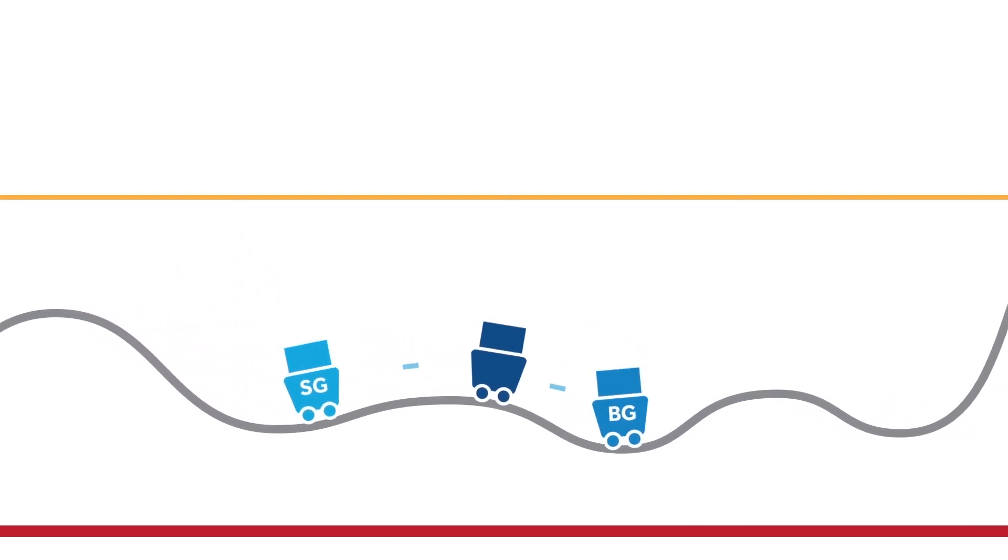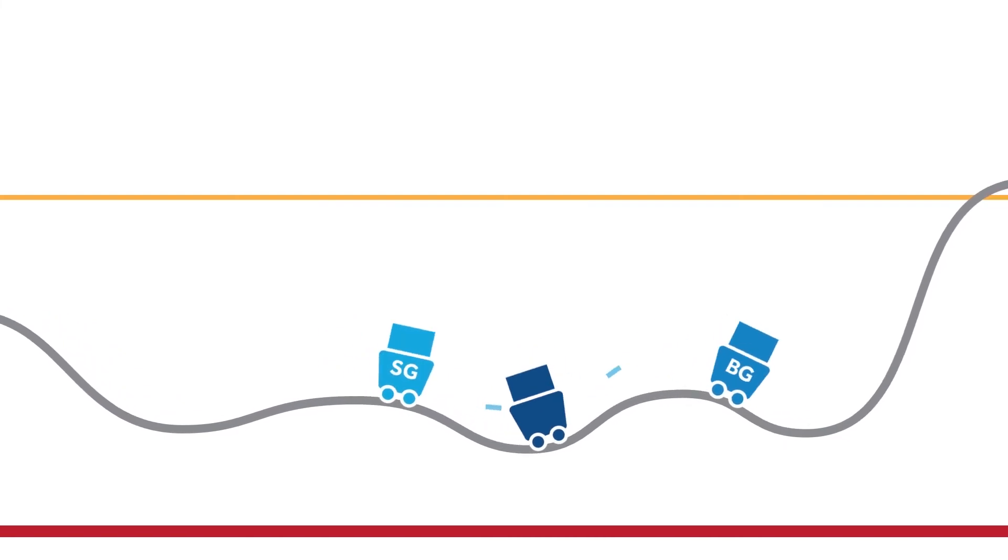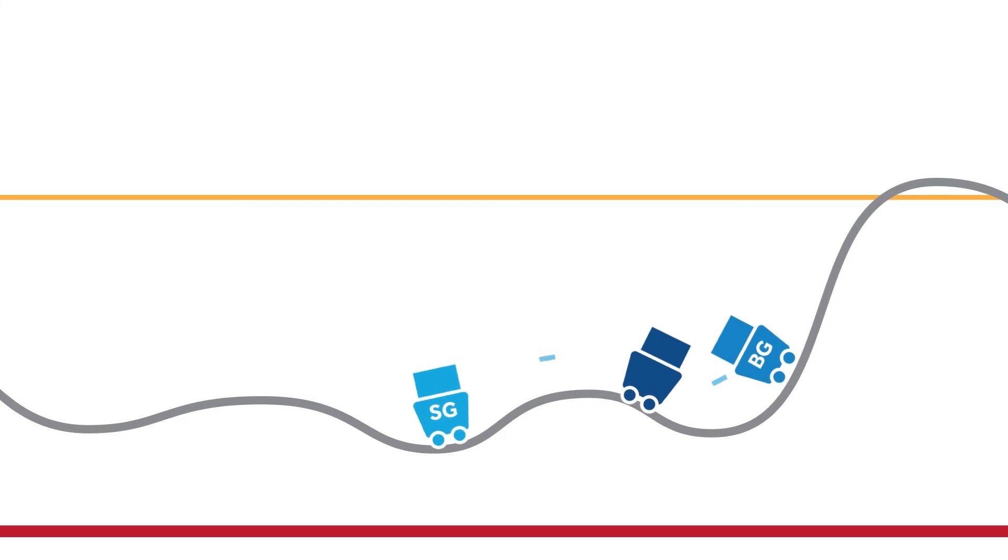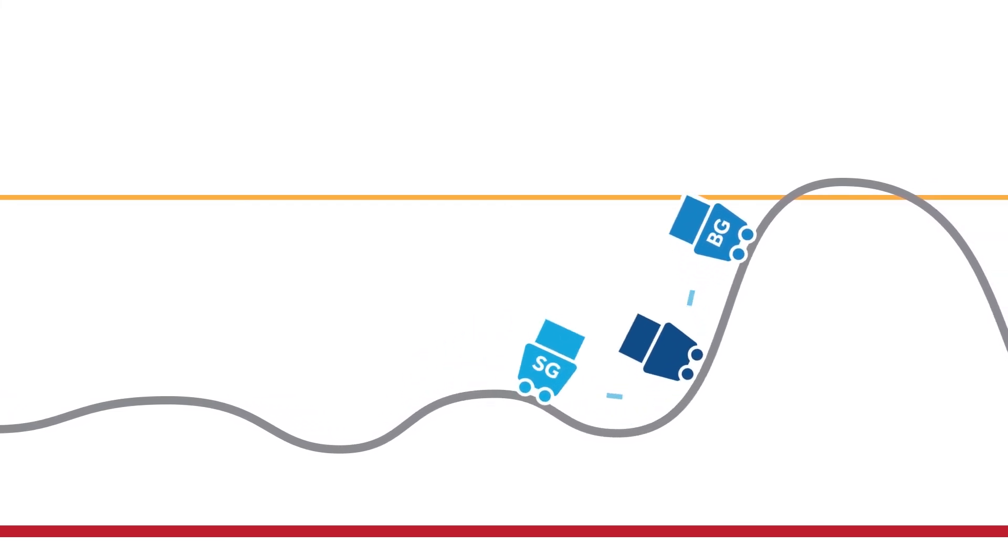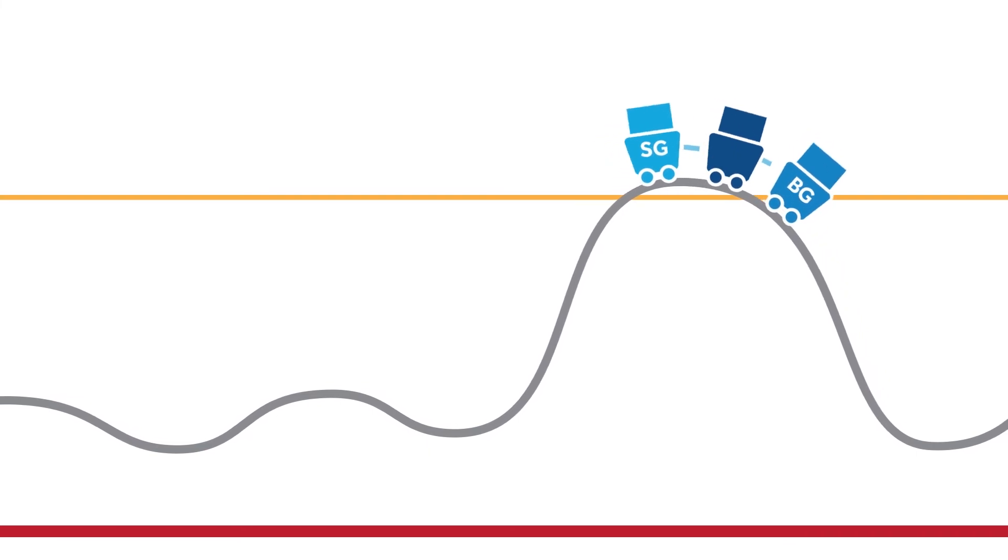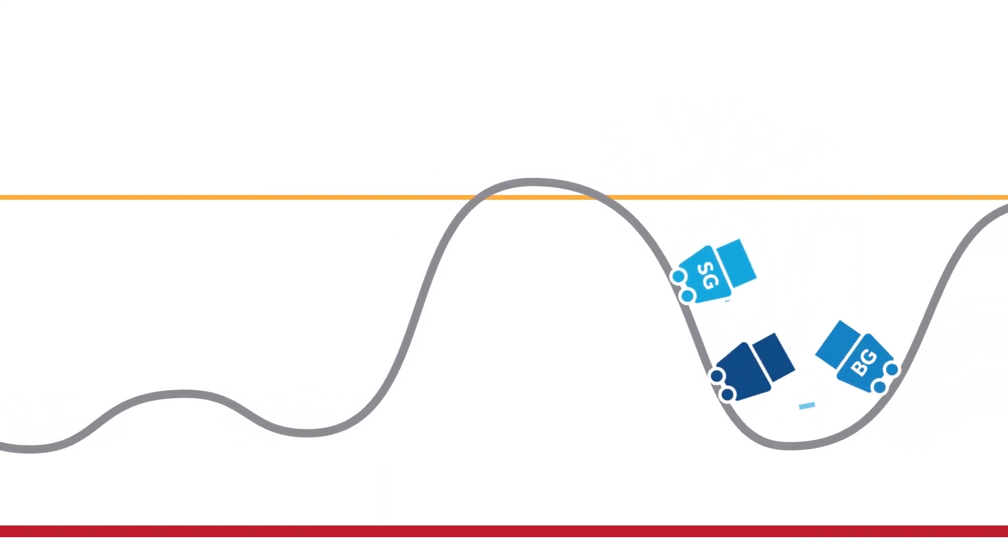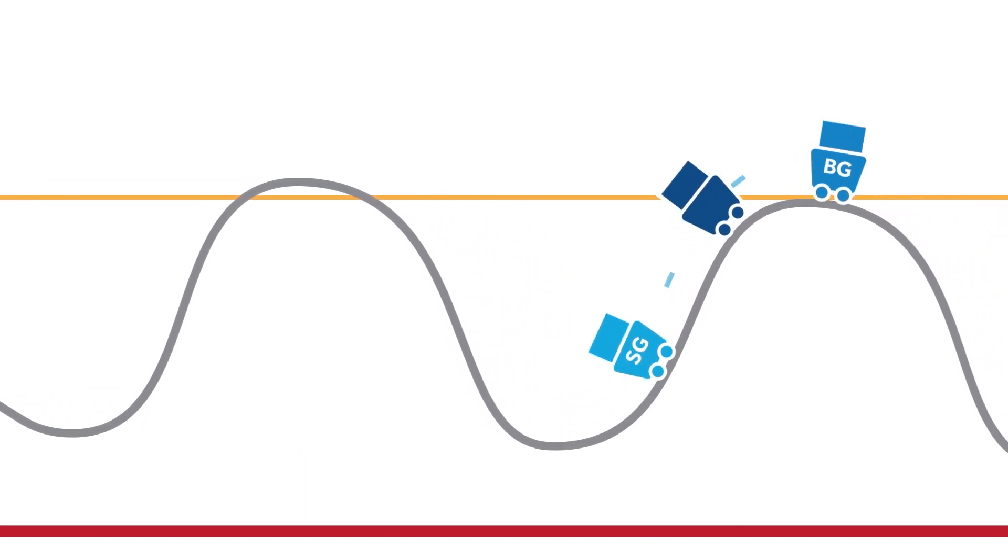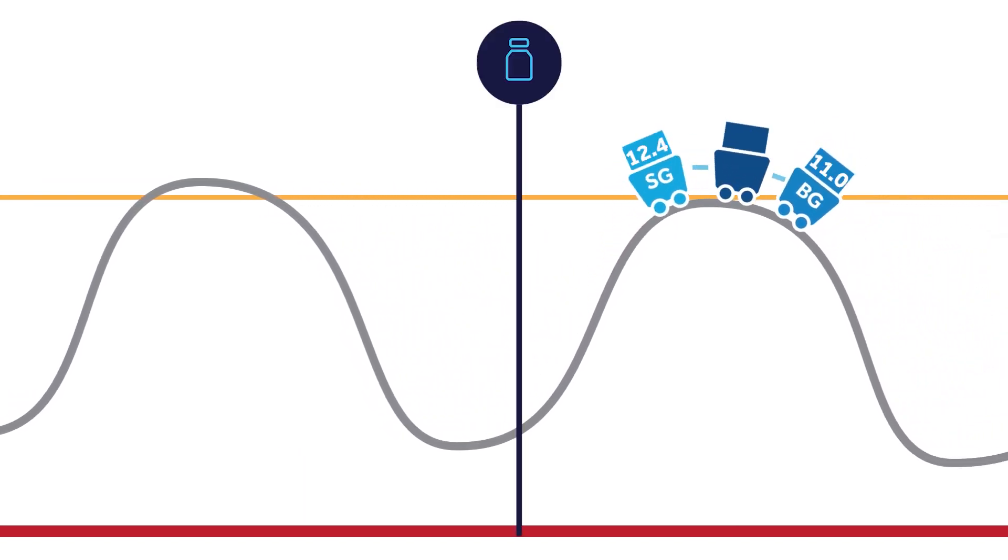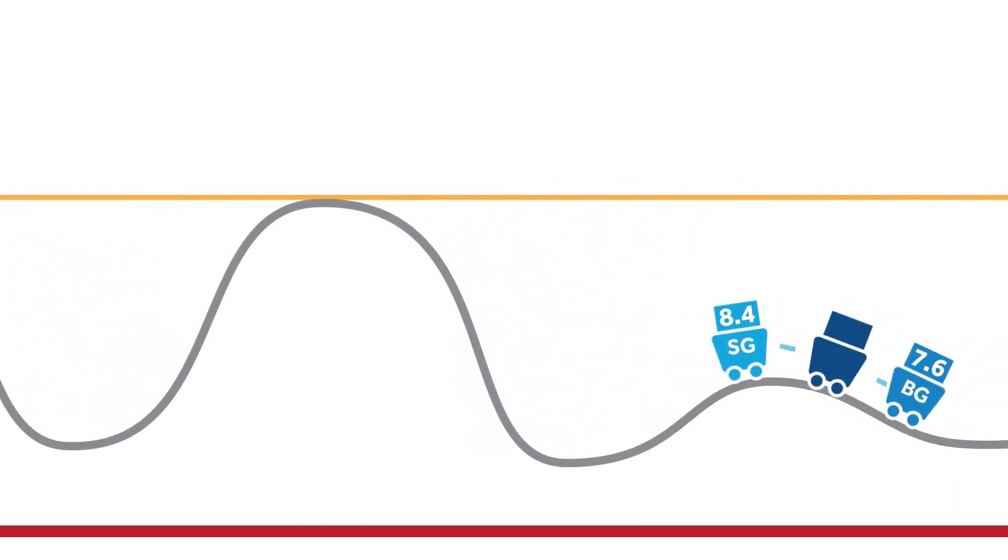Most often, the BG and SG numbers will be close to each other. However, you'll see a greater difference in BG and SG on the bigger hills, or when glucose is changing more rapidly. For example, after food, after insulin, and after exercise.